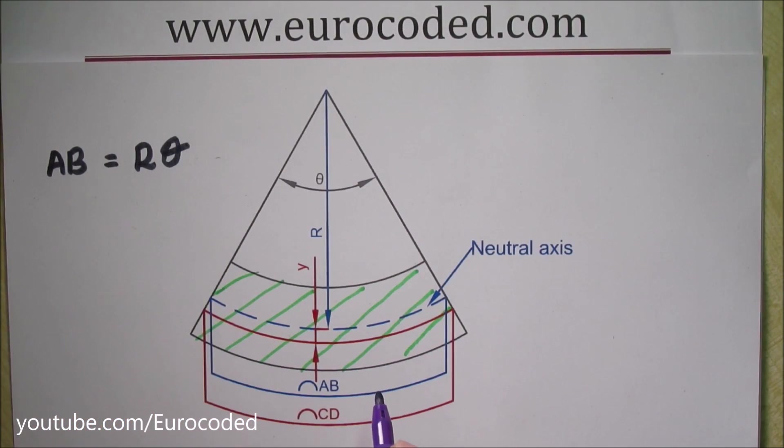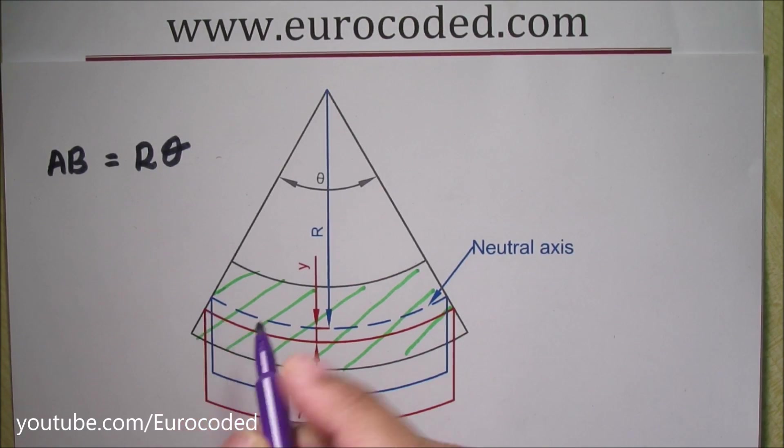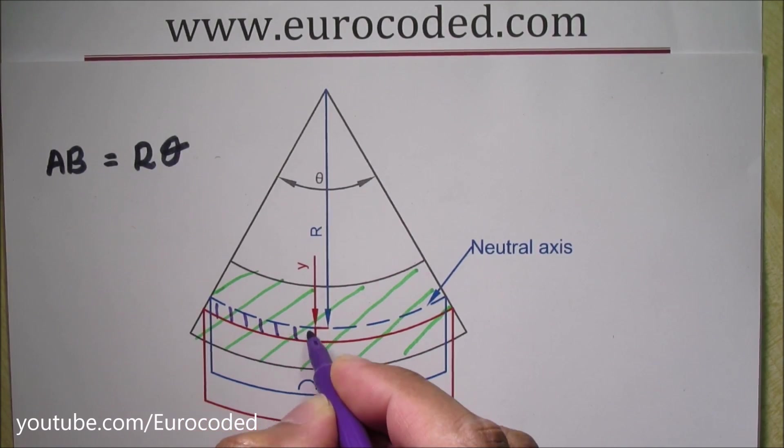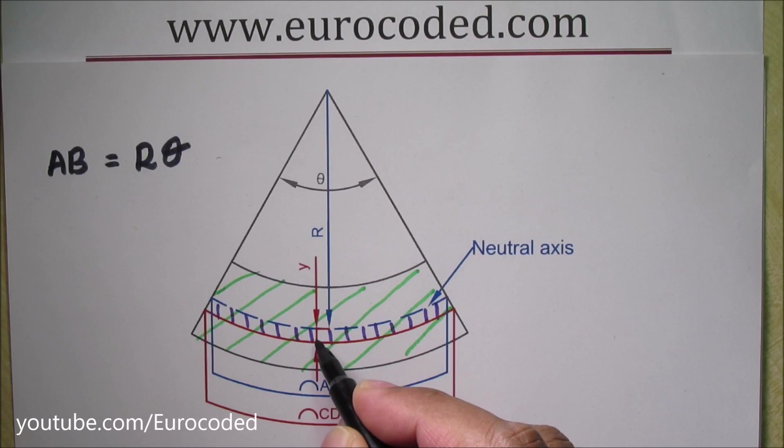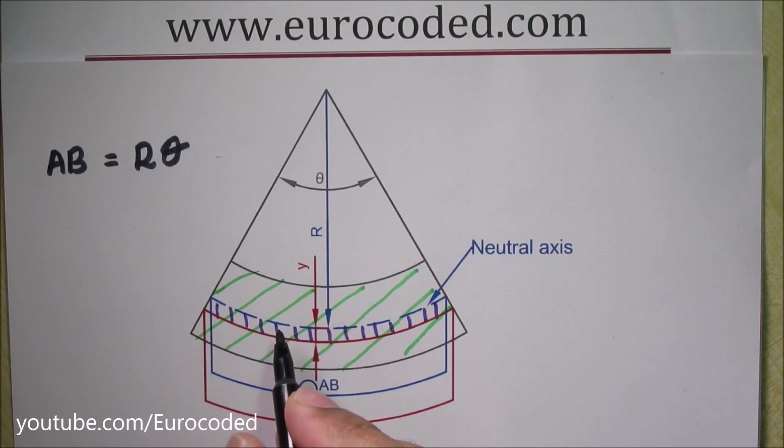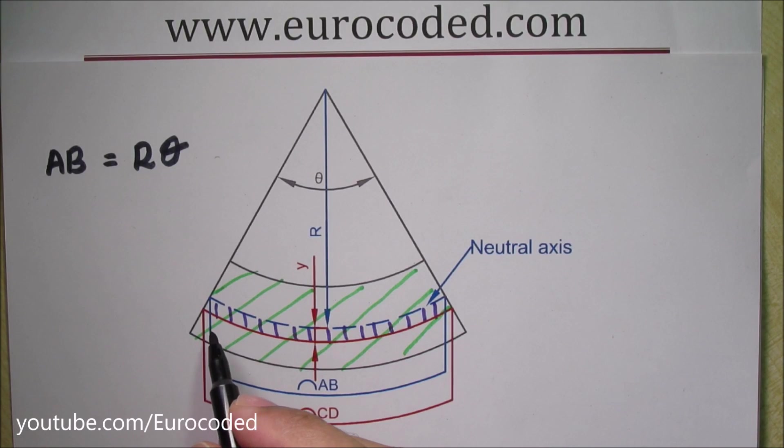Now let's consider a very small layer with thickness Y adjacent to the neutral axis. You're going to look at this small layer here. Thickness of that layer is Y, and this layer is stretched because the beam is curved. In other words, this layer has elongated or strained.